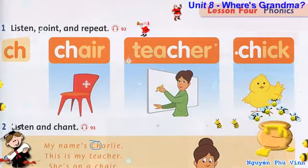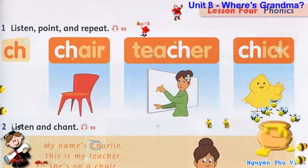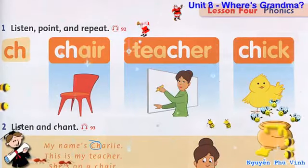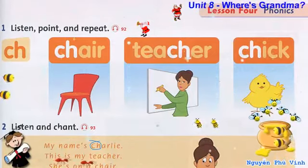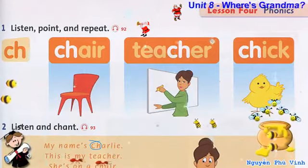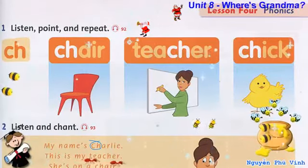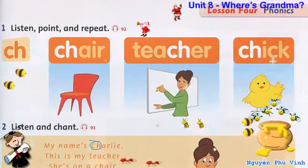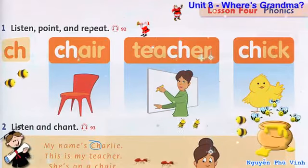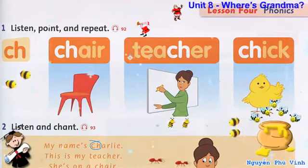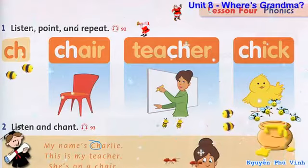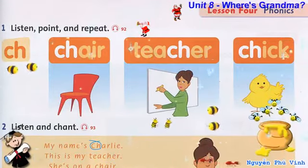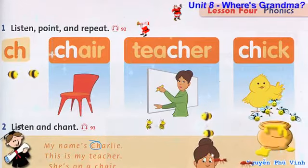Listen and point. K and H say ch. Chair - ch. Teacher - ch. Chick - ch. Chick - ch. Teacher - ch. Chair.